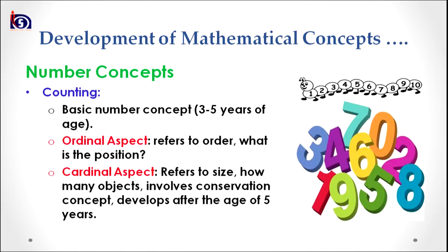Coming to the second mathematical concept category, which is number concept and operations on numbers. Under number concept, we have counting. Counting refers to the basic number concept and is well attained in the age of 3 to 5 years. When a child comes to school, he or she is able to count 1 to 10, however in rote, without assigning meaning to those numbers. But he or she is able to count at least 1 to 10 objects.